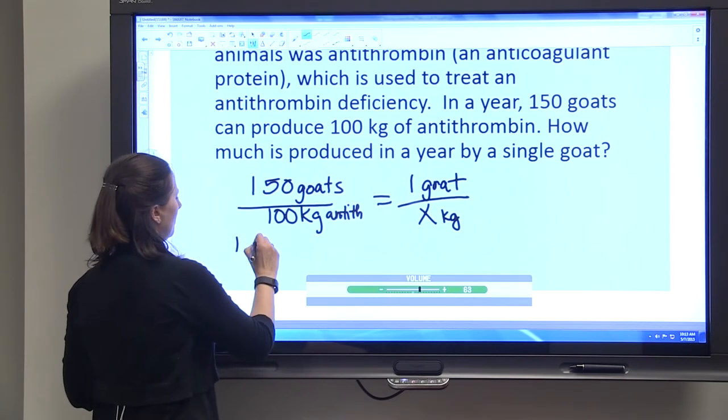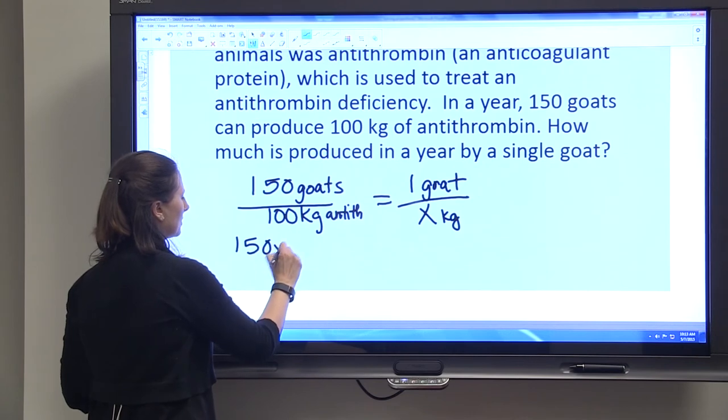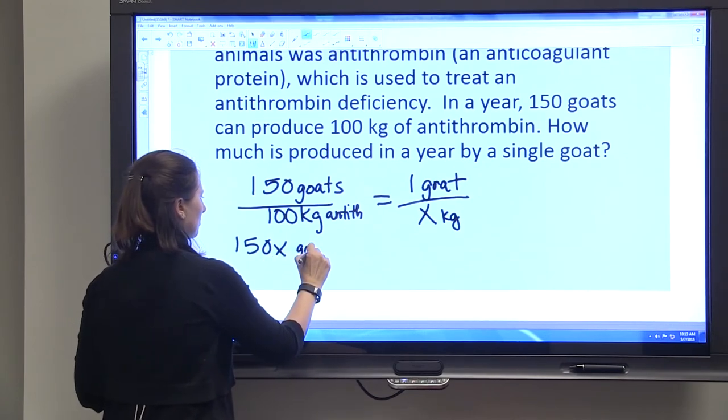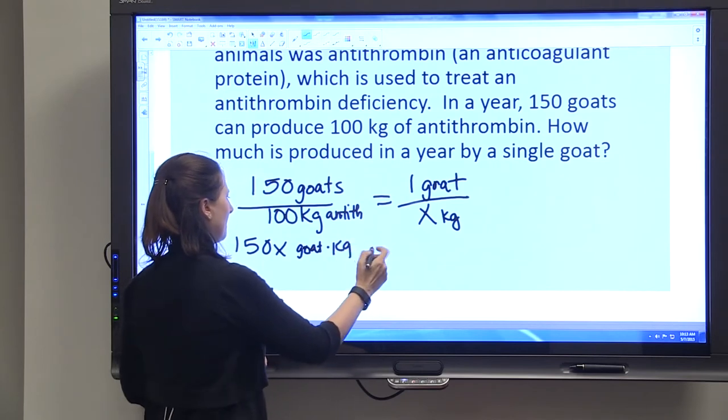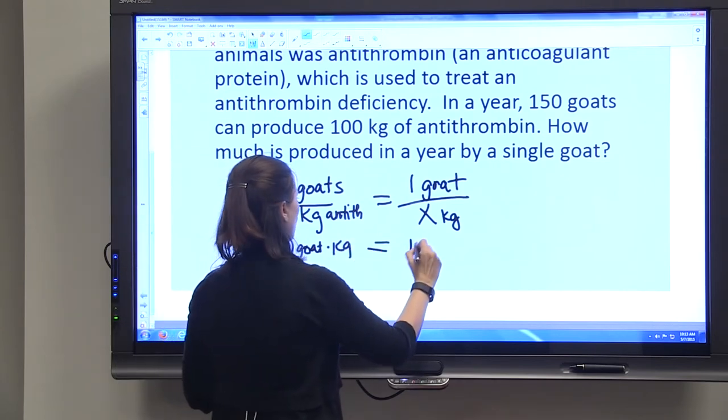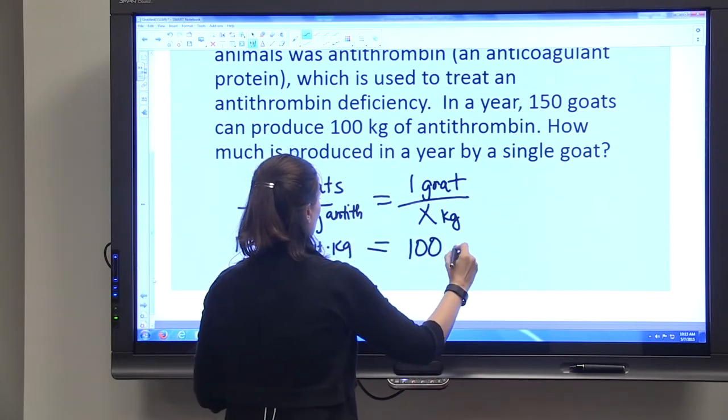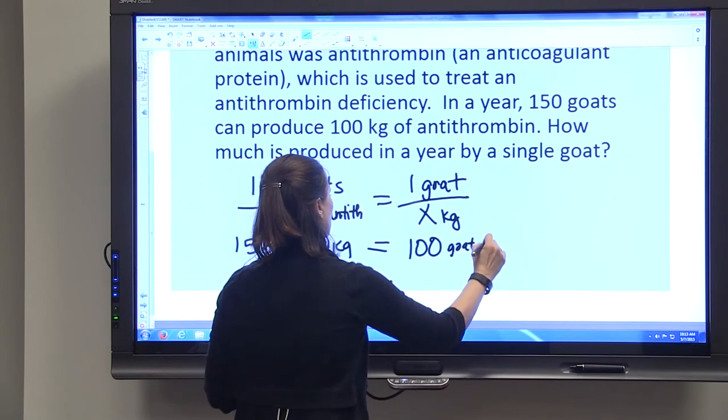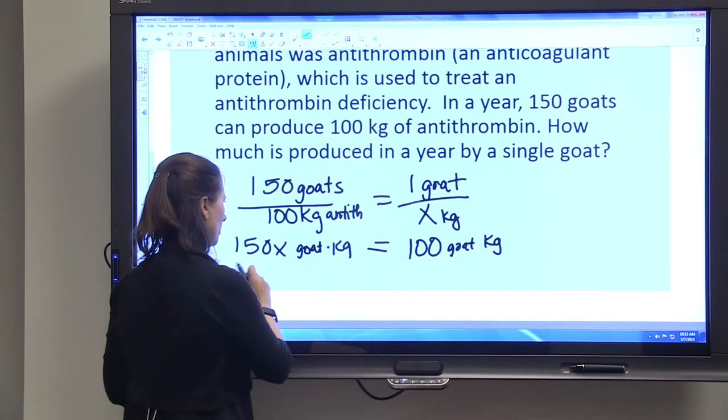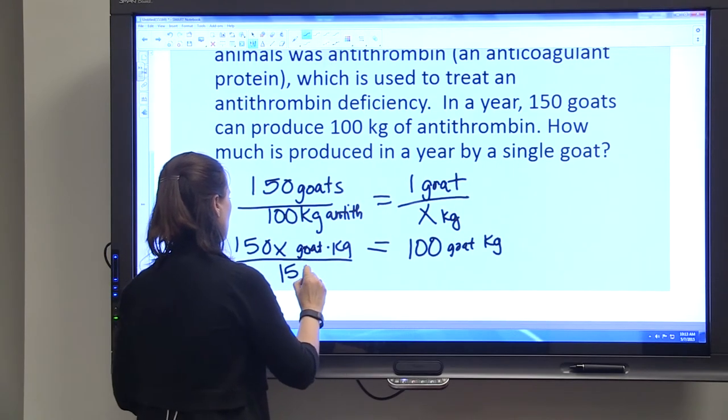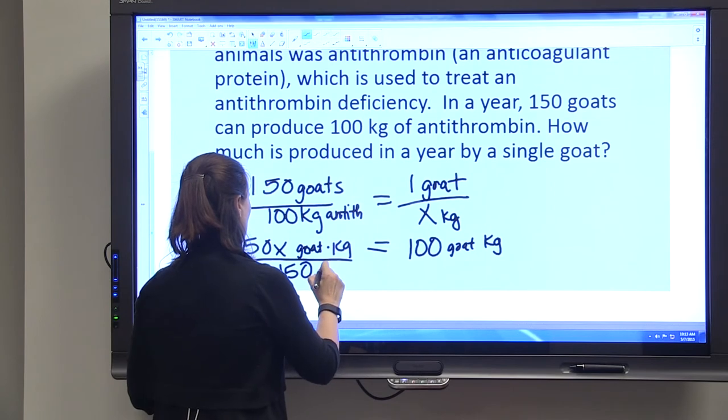Then you have 150x kg equals 100 kg. You're going to divide both sides by 150 goats.